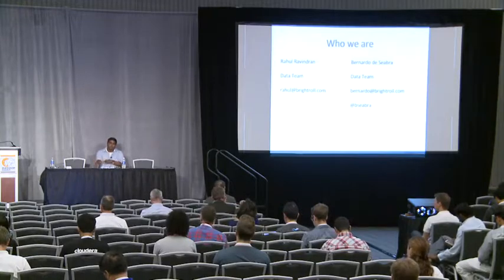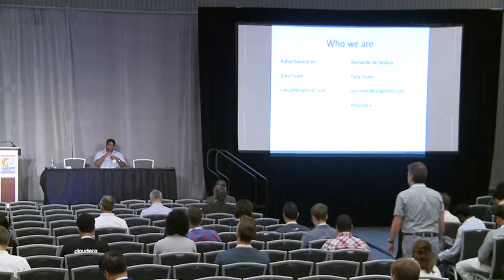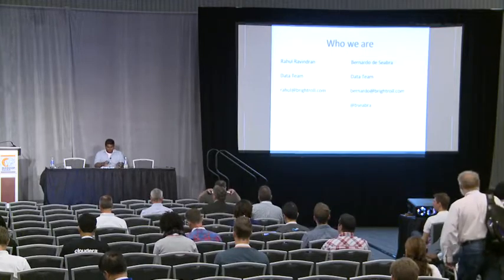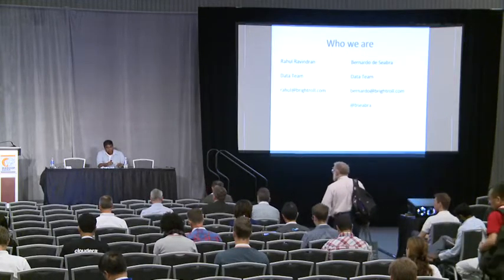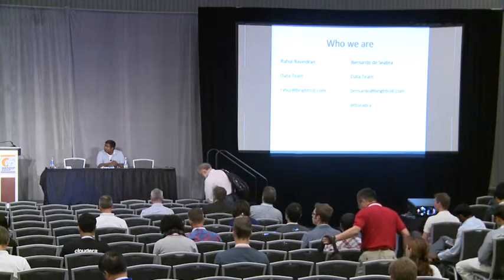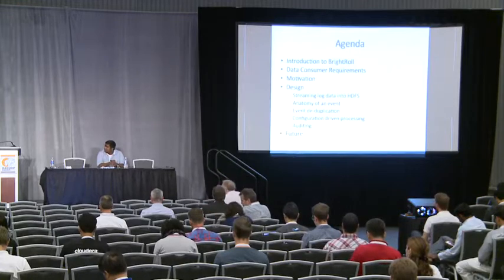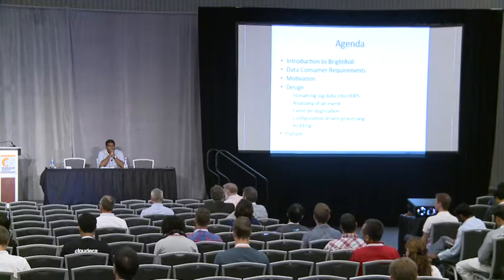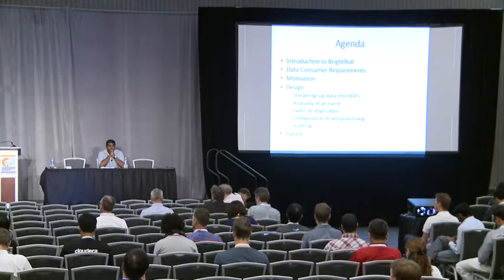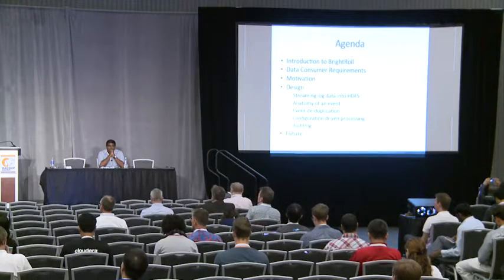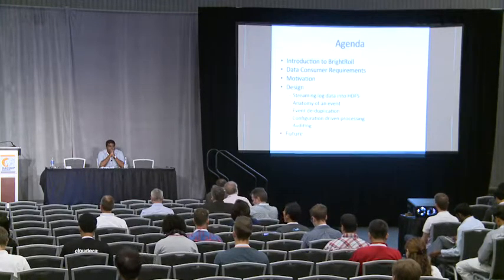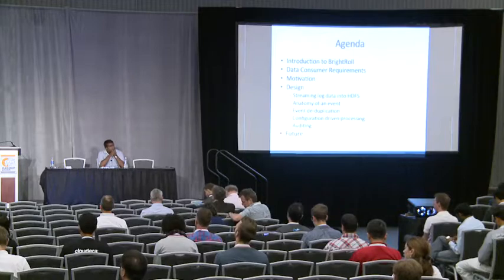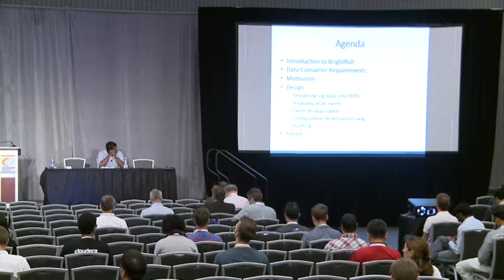Our team deals with all big data-related projects in the company, and more recently the data processing pipeline that we are here today to present some of the aspects and challenges we had to deal with. Rahul will cover some of that on the second part of the presentation. In the first part, I'm going to talk about what Brightroll does, what the company is about, what kind of data we collect, and the scale numbers we deal with. Then I'll cover some of the data consumer requirements — who are the consumers of data, what kind of data we expose, and some of the requirements of that data.